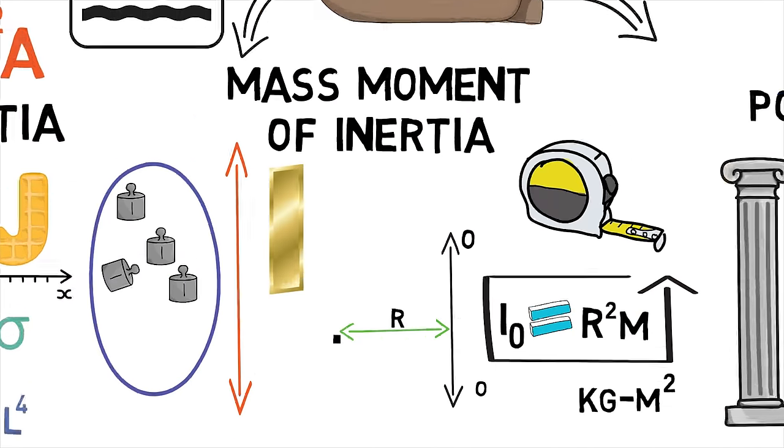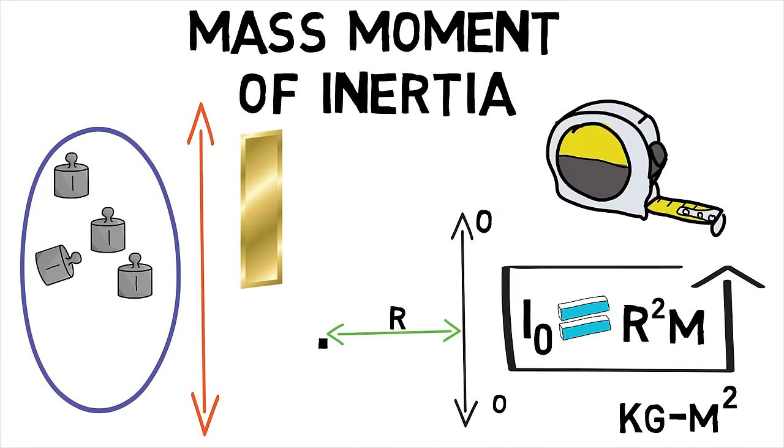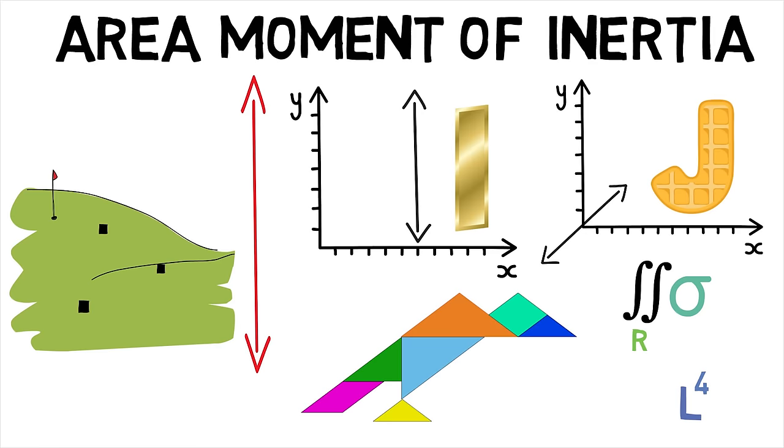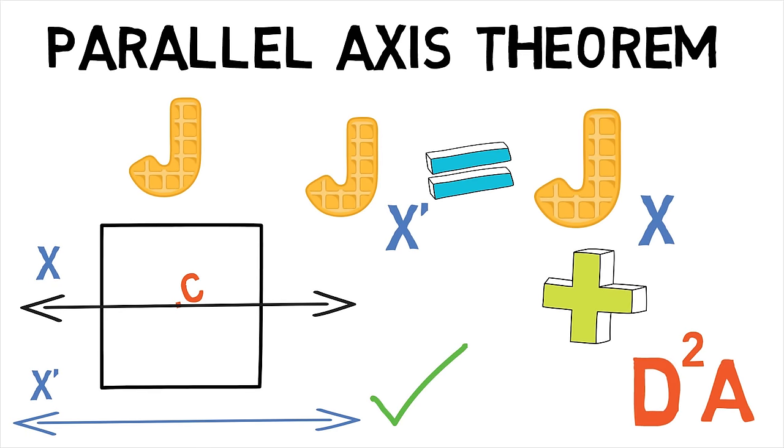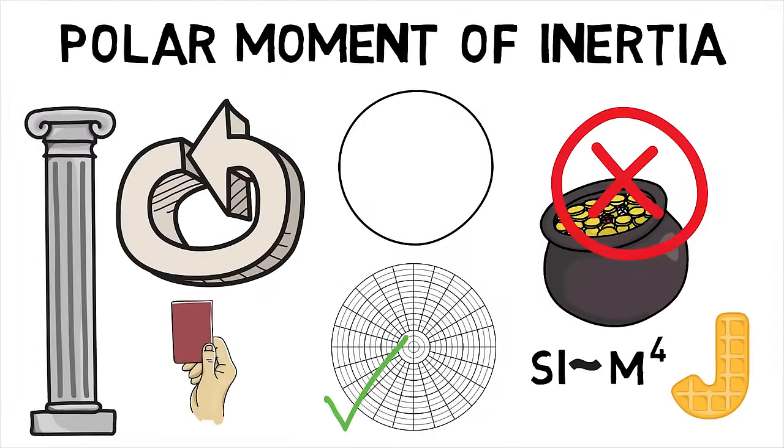Hence, we first saw what the mass moment of inertia is, then learned about area moment of inertia while looking at the parallel axis theorem, and then went on to see what the polar moment of inertia is.